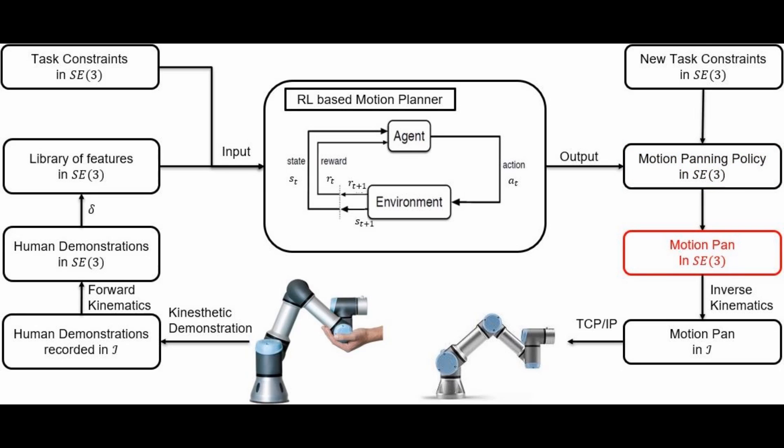Following which, a motion plan in the task space can be generated given new task constraints in the task space. Using inverse kinematics, the corresponding motion plan in the joint space can be obtained to control the robot through TCP IP.